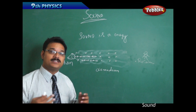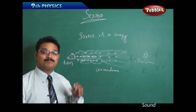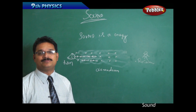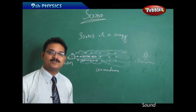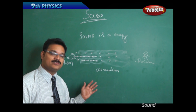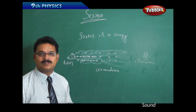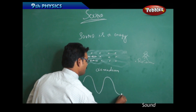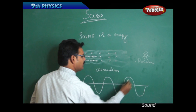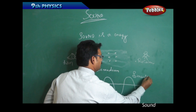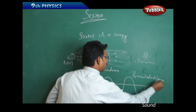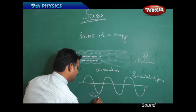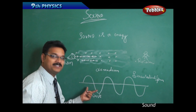Now, how could you show sound energy in a pictorial way? Scientists thought a great deal about how to represent energies pictorially, and they found a solution: sinusoidal forms. They have shown all different types of energies in sinusoidal forms, and sound energy has also been shown in the form of a sinusoidal wave. This sinusoidal form is called a wave, and a wave is the energy representation.